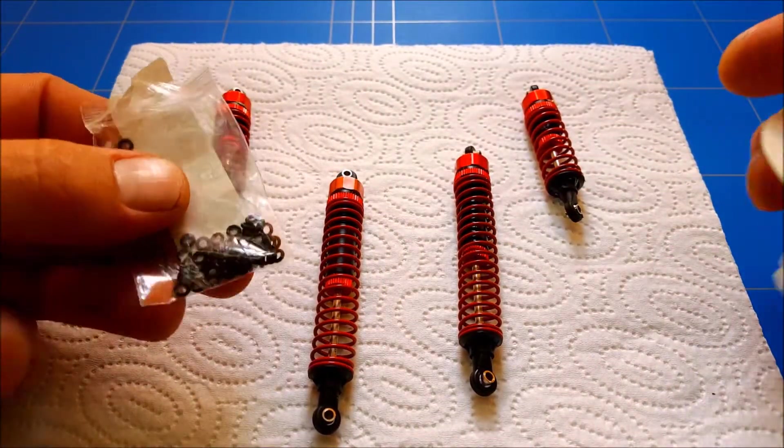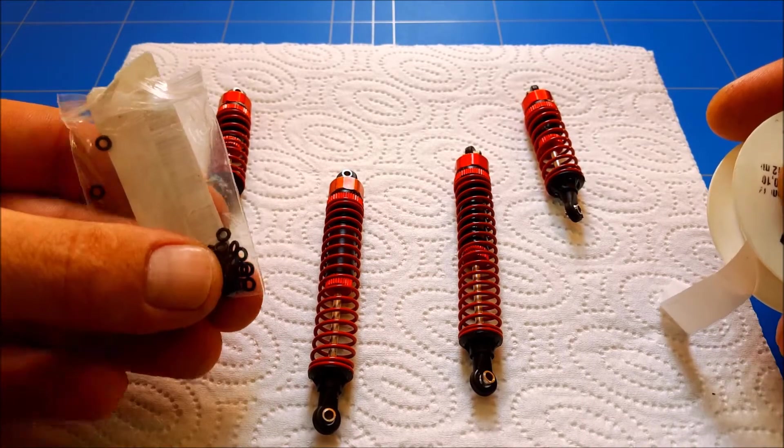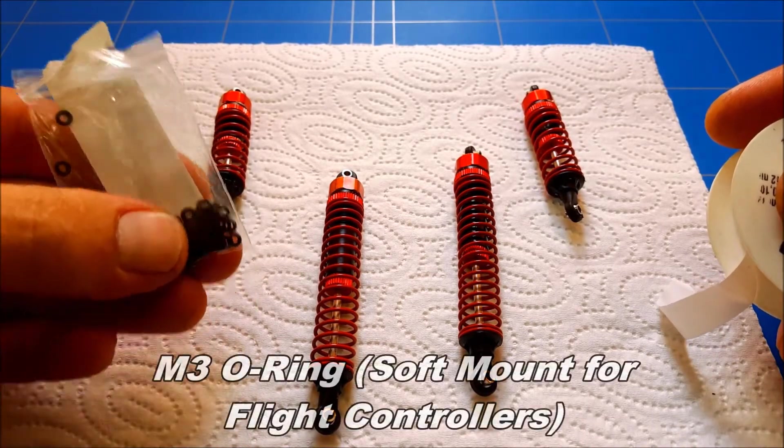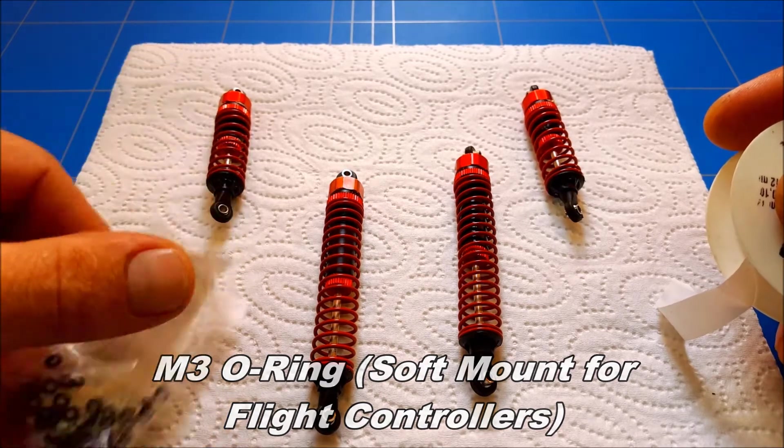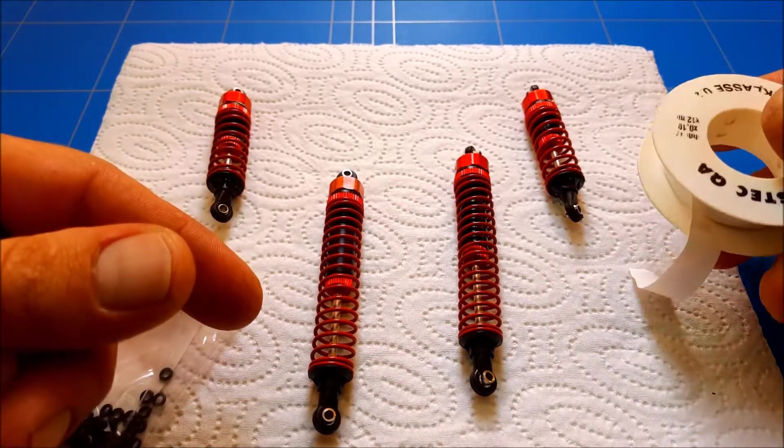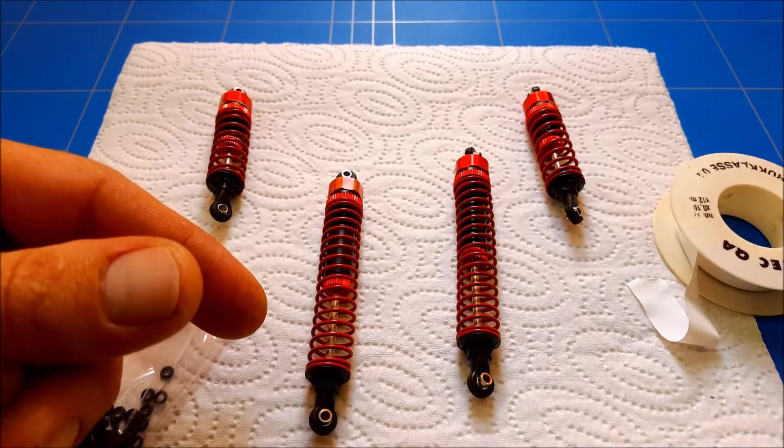The only things you need are a few of these M3 rubber o-rings, just cost 50 cents for 50 pieces. I'll put the links down below. Some tiny teflon tape and of course some oil.